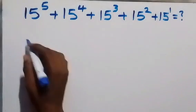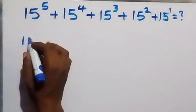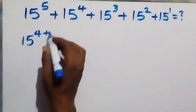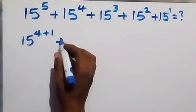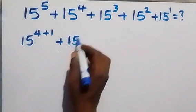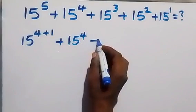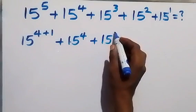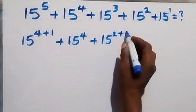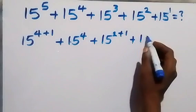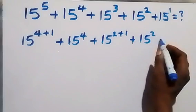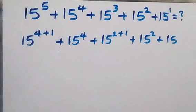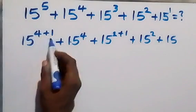From here we can rewrite this as 15 raised to power 4 plus 1, then plus 15 raised to power 4, then plus 15 raised to power 2 plus 1, then plus 15 raised to power 2, then plus 15.